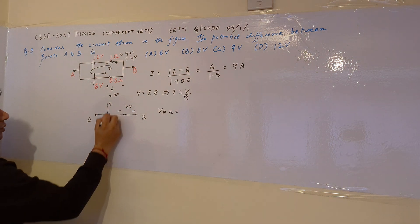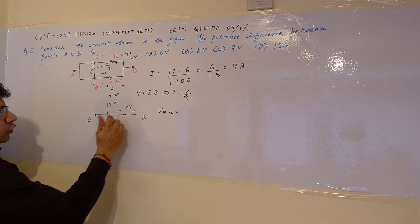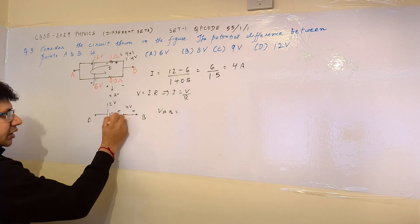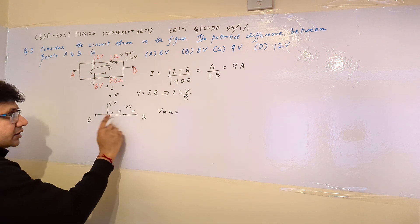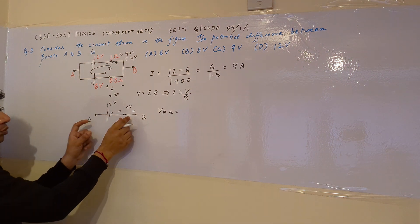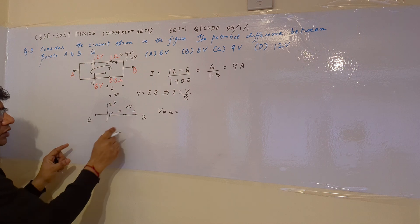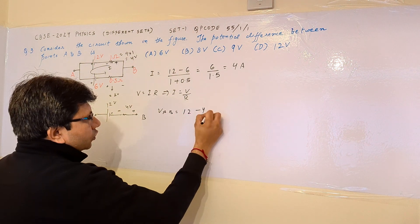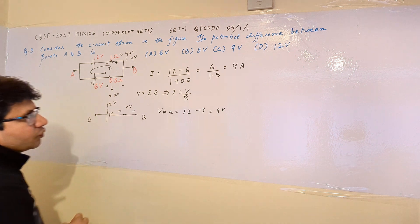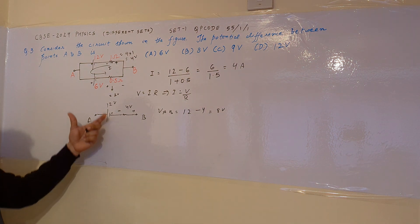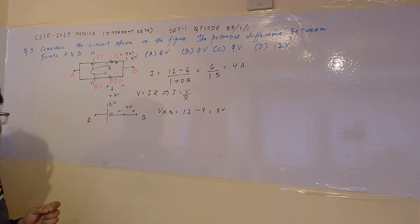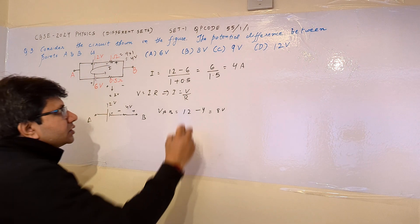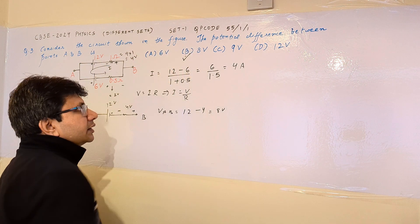This comes out to be: minus 4 because this is the minus end — the same polarities are opposing. So 4 volts and 12 volts are opposing voltages. Therefore VAB equals 12 minus 4, which equals 8 volts. So we have calculated the voltage between points A and B: 8 volts is the final answer, and option B is the correct answer.